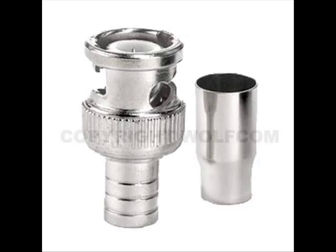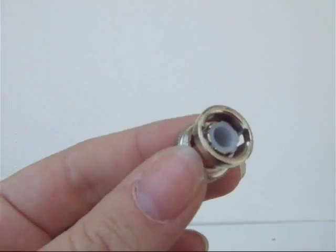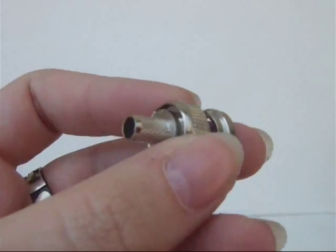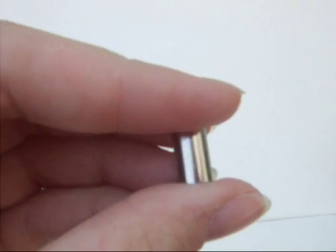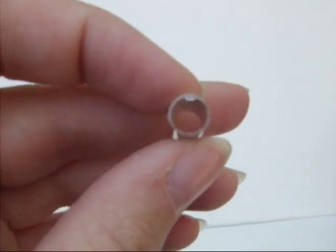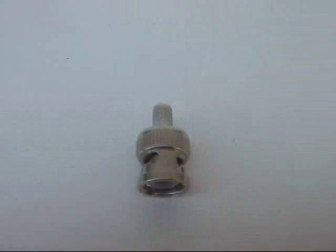Easy connection for your RG-59 Siamese cables to become BNC ends. This crimp on connector is made up of two pieces. This product is a must have for security professional installers.